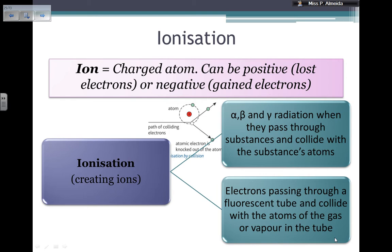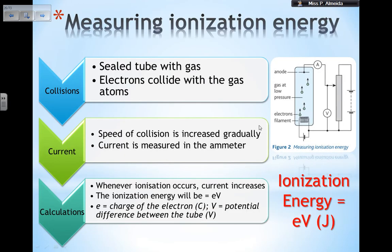There are at least two ways to ionize an atom. One is by radiation — alpha, beta, or gamma — which, when passing through a substance and colliding with its atoms, can knock an electron out if it has enough energy. The other way is by having electrons pass through a fluorescent tube and collide with the atoms of the gas or vapor inside.